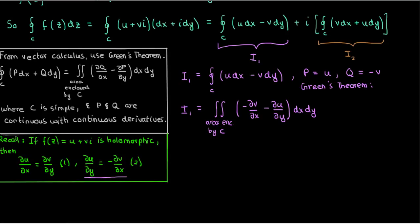Since these two partial derivatives are being subtracted in the integrand of I₁, it follows that this integrand becomes 0, which means that this integral I₁ as a whole becomes 0.